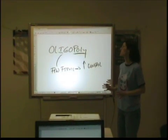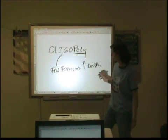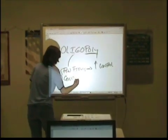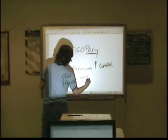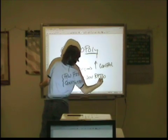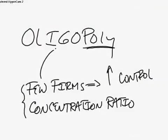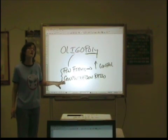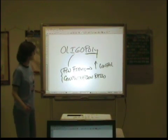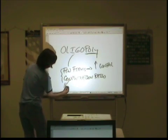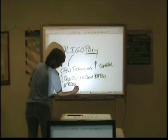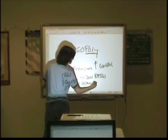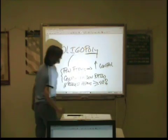One way to look at it is in terms of what's called a concentration ratio — that may or may not be in whatever book you're using. If you look at what percentage of market sales are controlled by the four biggest firms, and that figure is greater than or equal to 40%, it's an oligopoly.